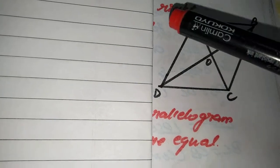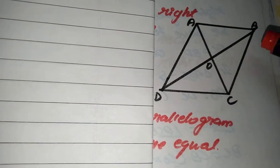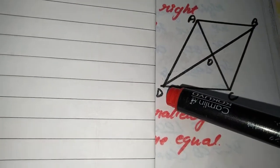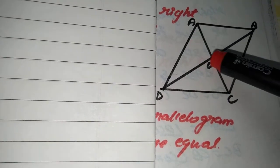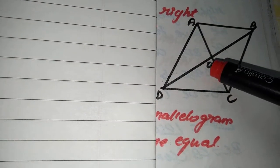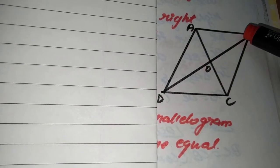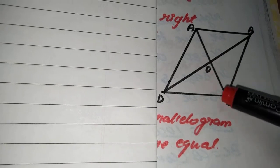Here is my quadrilateral A, B, C, D. According to the question, the diagonals are being bisected. Bisected means two equal parts, that is AO equal to CO and similarly BO equal to DO. And all the angles AOB, BOC, COD and DOA are all 90 degrees.